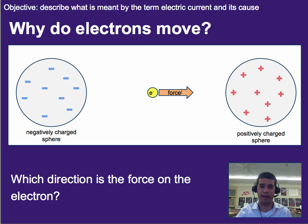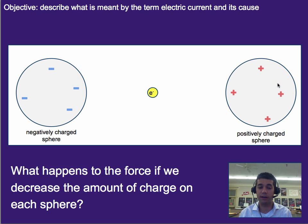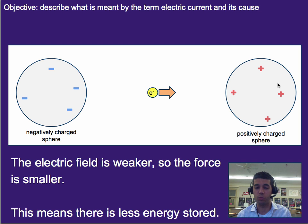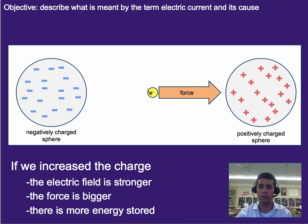Now, if instead we were to have fewer charges on each of these spheres, then that force would be a little bit less. So in this case, it would be a weaker force because the electric field is weaker, and so the force would be smaller. So we wouldn't have nearly as much energy stored in its position right here. If instead we increased the amount of charge that's on each of these spheres, we would have much more force acting on this electron, and so we would actually have a greater amount of energy stored.